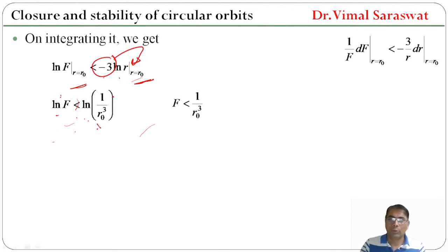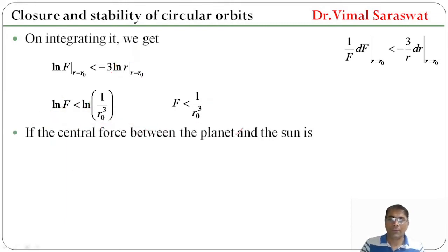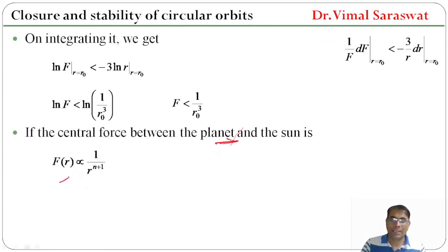To eliminate the natural log on either side, we take the exponential, so the exponential and log cancel. Thus F < 1/r₀³. So if the central force between the planet and the sun is F(r) ∝ 1/r^(n+1), then F(r) = −k/r^(n+1), where the negative sign is due to the attractive force and k is the proportionality constant.